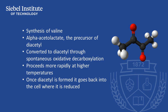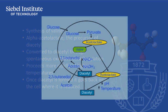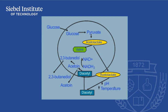Once diacetyl is formed, it goes back into the cell, where it's reduced to acetoin and 2,3-butanediol. These two compounds will leak out of the cell, but they have very high flavor thresholds and will not be present at concentrations that are detectable.